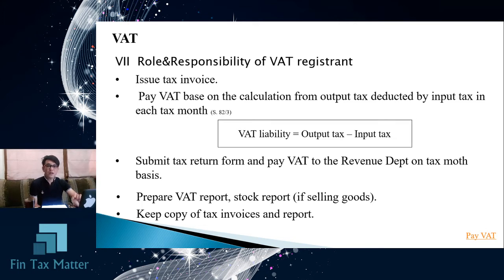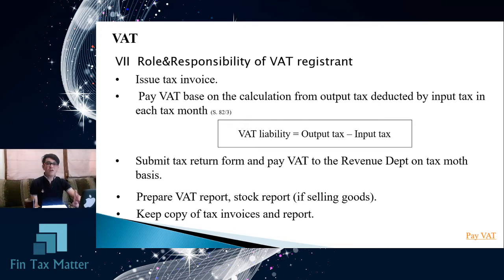However, if they sell a product and the product is a VAT product, they have to prepare another report called the stock report. This report is prepared on a monthly basis and shall be prepared per place of business. When the taxpayer is required to register as a VAT registrant, they have to register each place of business — the head office counts as one place, and they must register all branches as additional places of business. So the report is prepared based on each place of business.